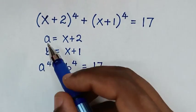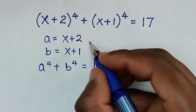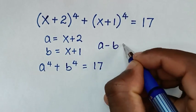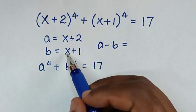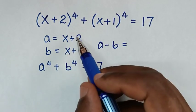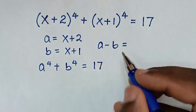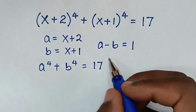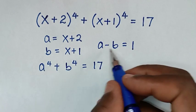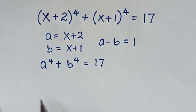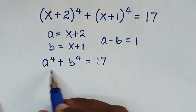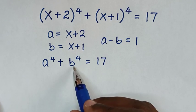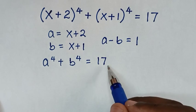From here, a minus b equals x minus x = 0, and 2 minus 1 = 1, so a - b = 1. We will substitute a - b = 1 into our equation a⁴ + b⁴ = 17.